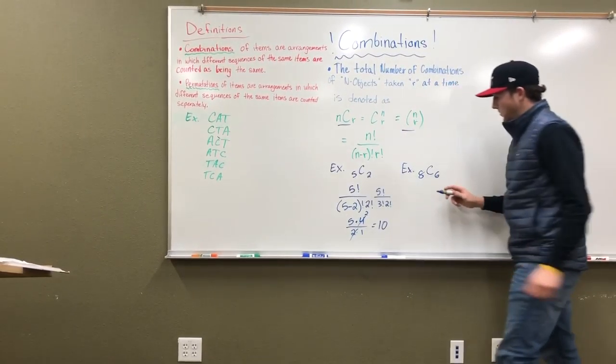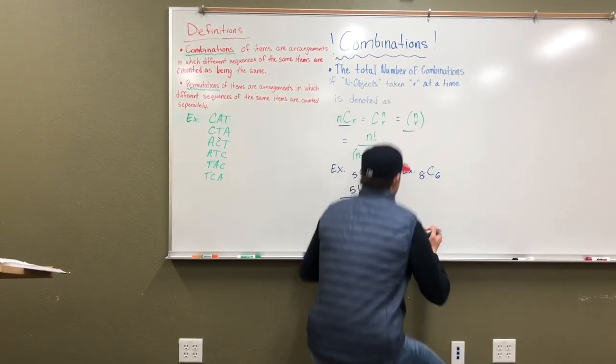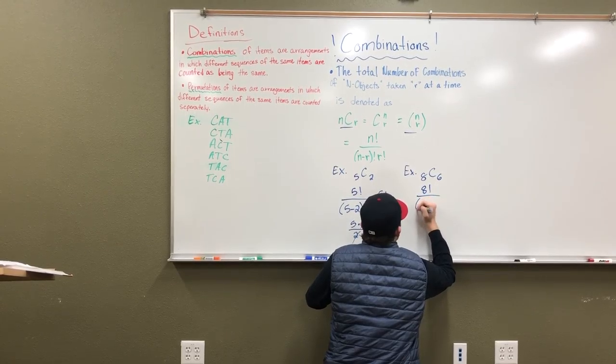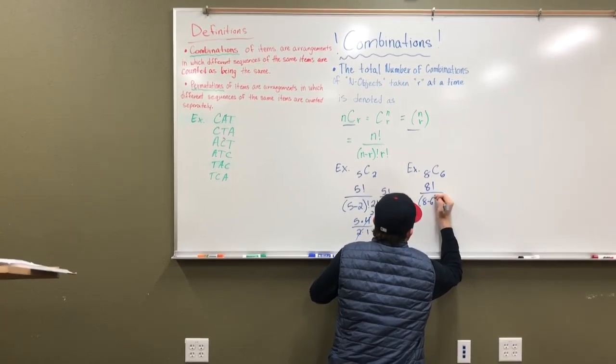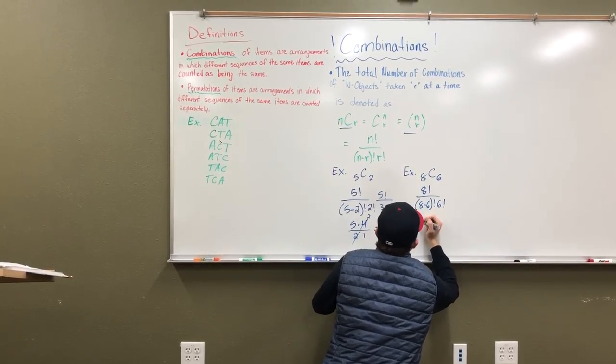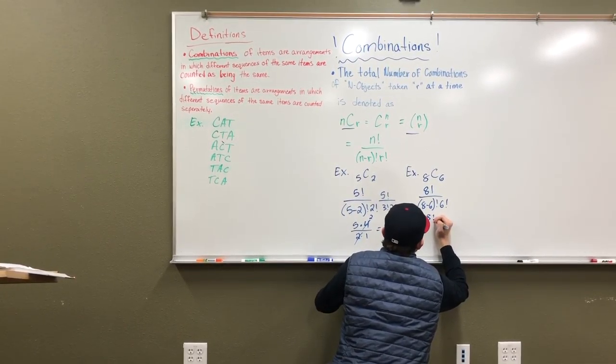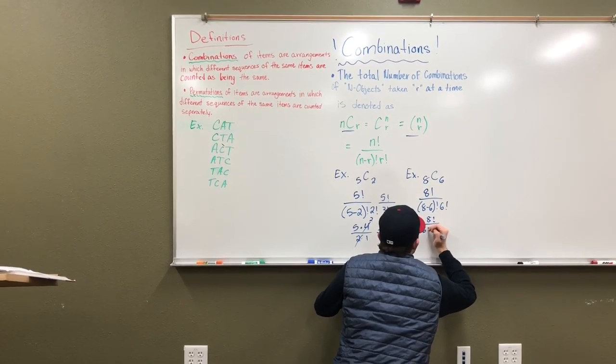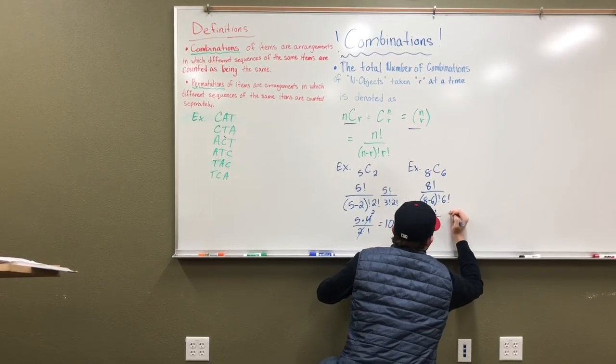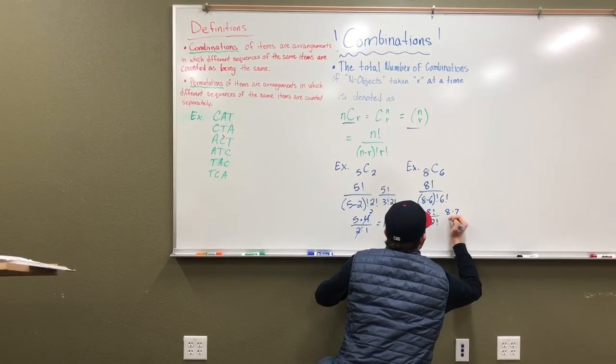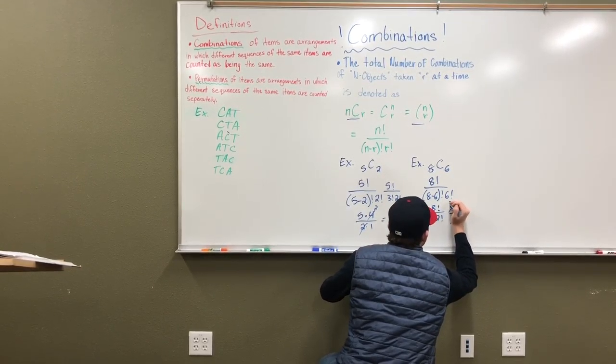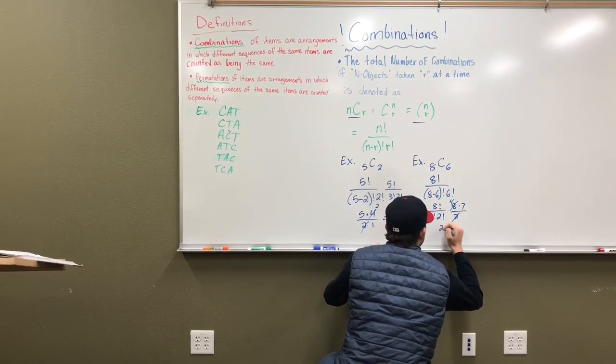For our second example, we have eight choose six. So we're going to go back here and we're eight factorial over eight minus six factorial times six factorial. So seeing that we have eight factorial over six factorial times two factorial, we can cross out all the rest up here. So we'll have eight times seven over two. So we simplify, four times seven is 28.